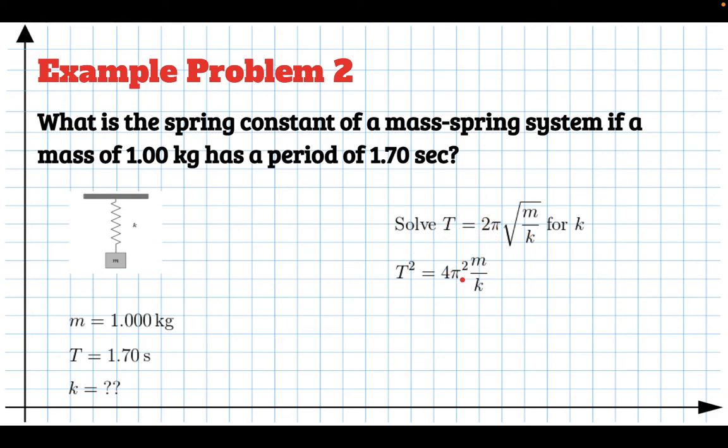Now we're trying to find k. So the next thing I would do is I would multiply both sides by k because you've got to get k out of the denominator. Multiply both sides by k, you get kT² = 4π²m. And now to get k by itself, you can divide both sides by T². And there you have an algebraic solution for the spring constant. You can plug in your numbers and you can show it's about 13.7 newtons per meter. So you can solve this problem for the spring constant. So that's two examples.